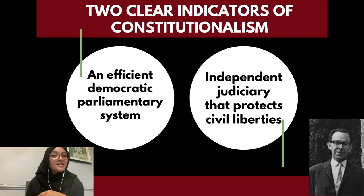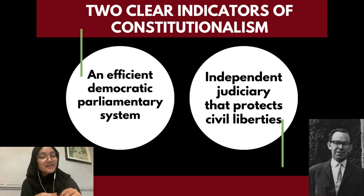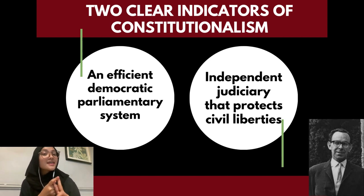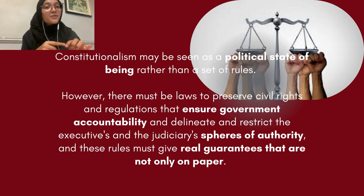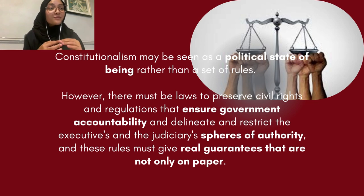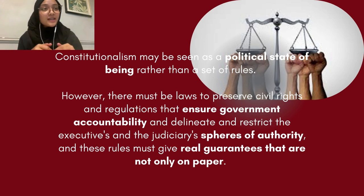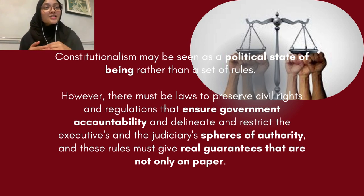Based on what Dismith has defined constitutionalism as, there are two key points — two clear indicators of constitutionalism — which are an efficient democratic parliamentary system and an independent judiciary that protects civil liberties. Based on the principles of constitutionalism and Dismith's definition, constitutionalism may be seen as a political state of being rather than a set of rules. However, there must be laws to preserve civil rights and regulations that ensure government accountability, and it is important to delineate and restrict the executives' and the judiciary's spheres of authority. These rules must give real guarantees that are not only on paper.